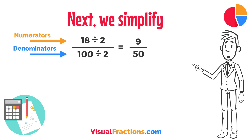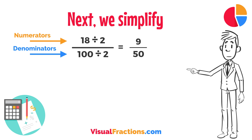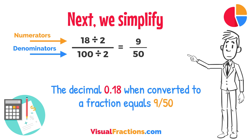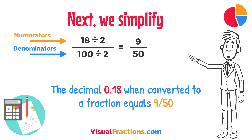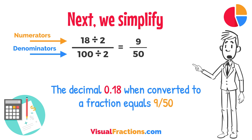So 18/100 simplifies neatly to 9/50. And there you have it — the decimal 0.18, when converted to a fraction, equals 9/50. This fraction is in its simplest form and cannot be further simplified.